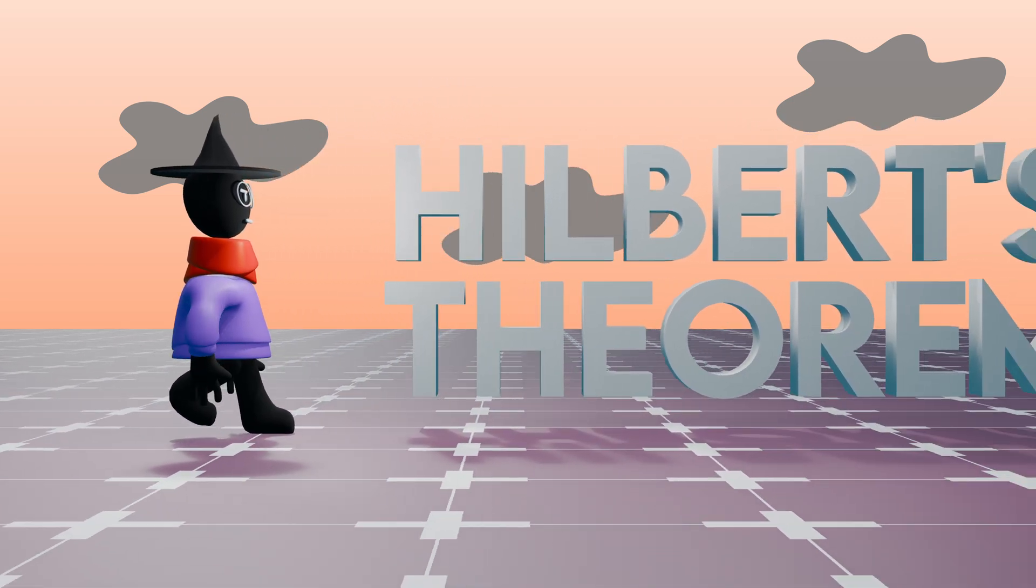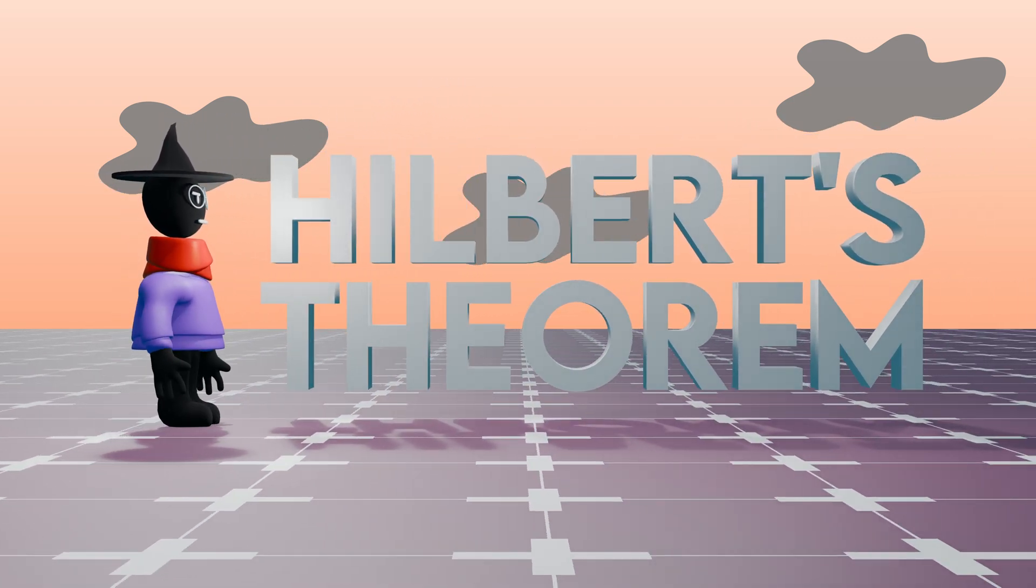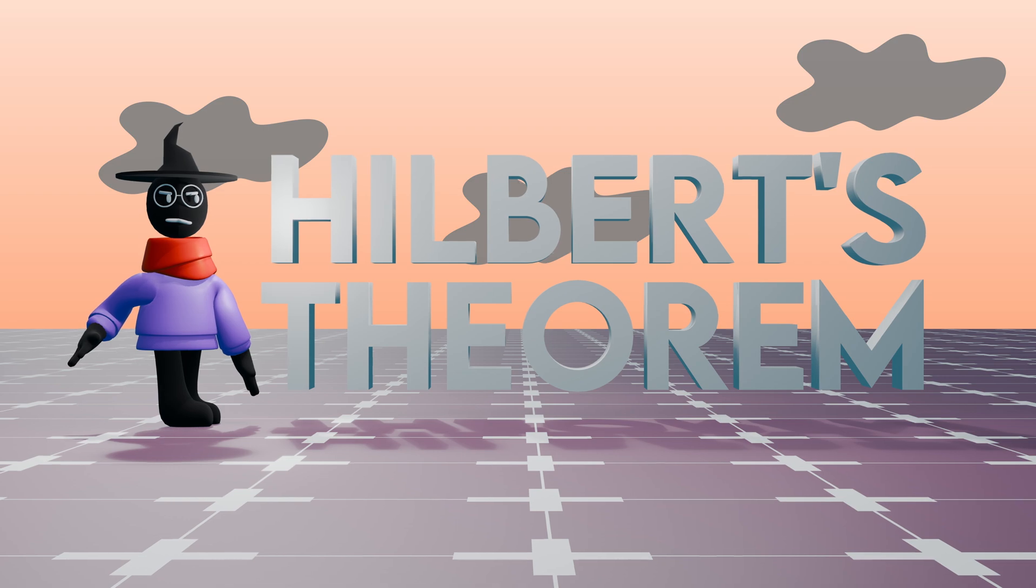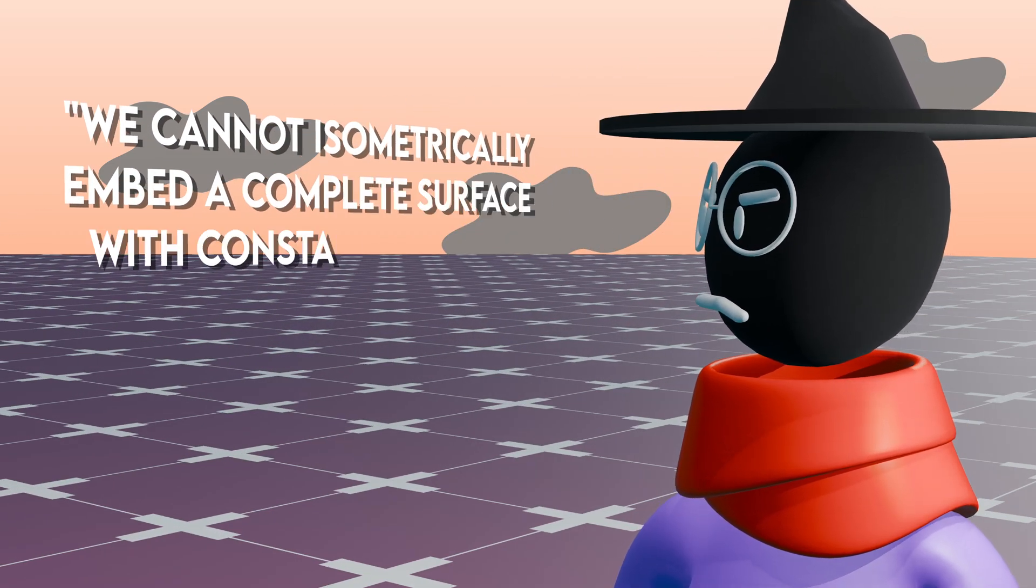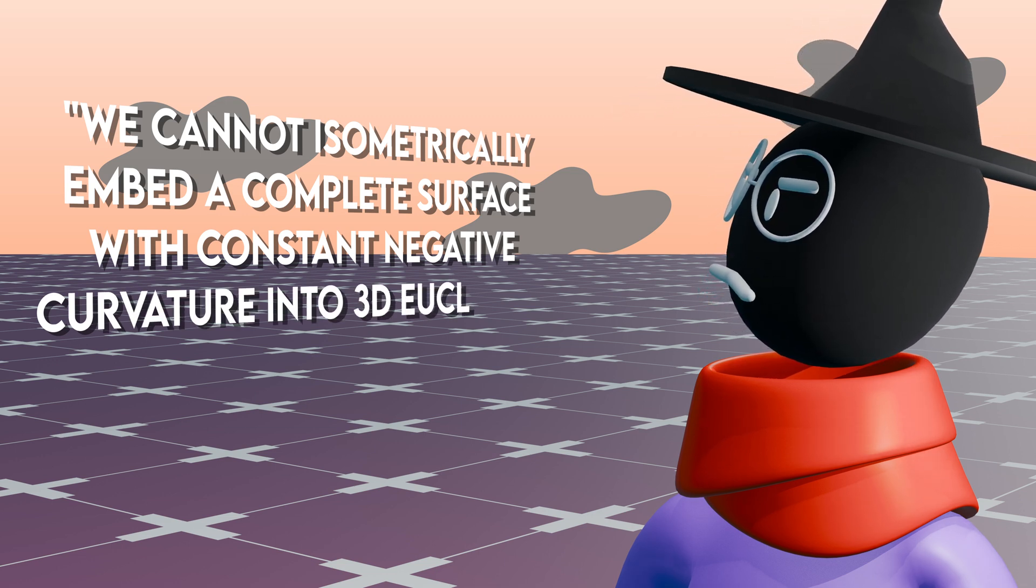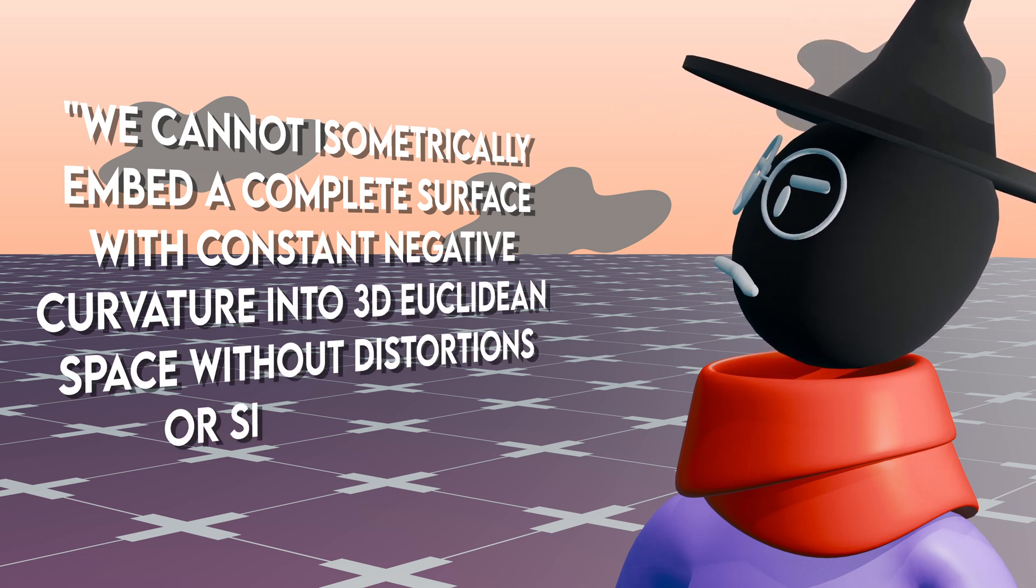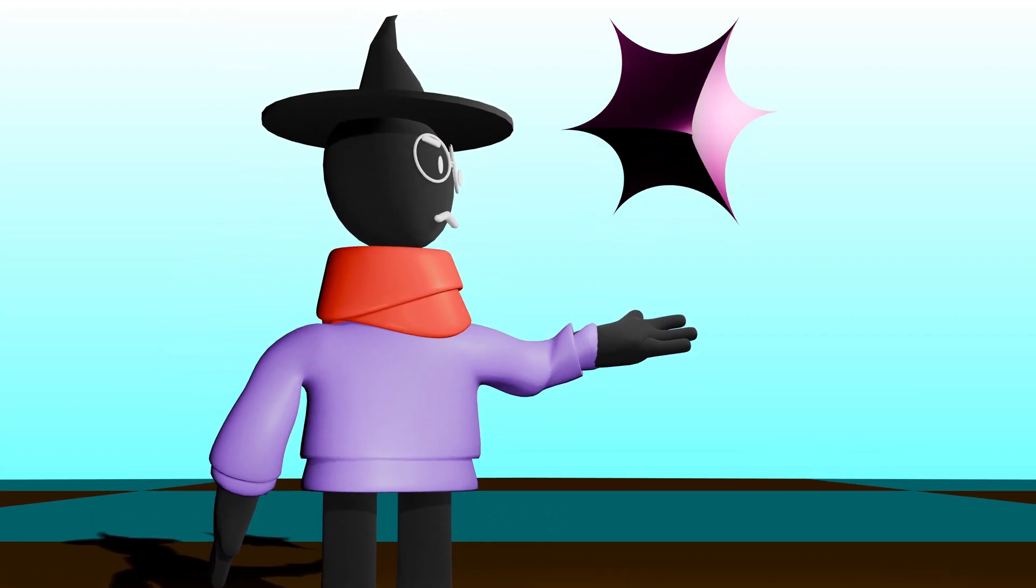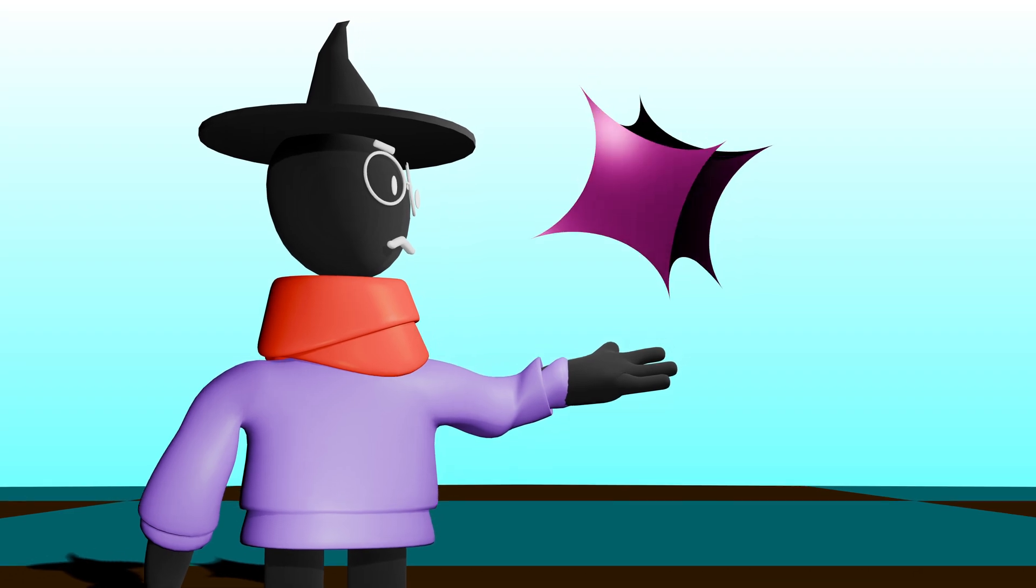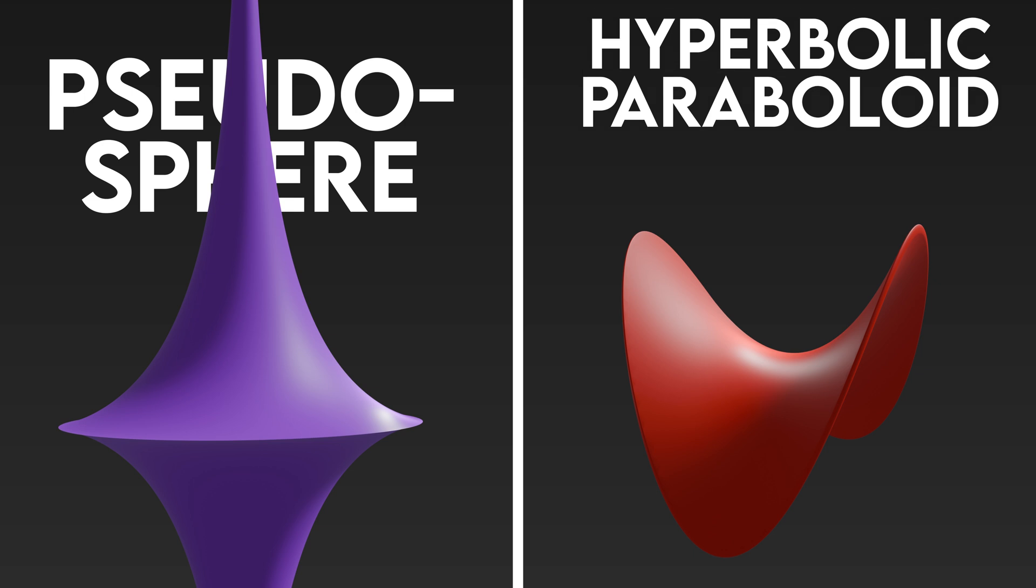A problem we run into when projecting hyperbolic geometry is Hilbert's theorem. We cannot isometrically embed a complete surface with constant negative curvature into 3D euclidean space without distortions or singularities. The best visualizations without projection are geometries with singularities or non-constant curvature like the pseudosphere or the hyperbolic paraboloid.